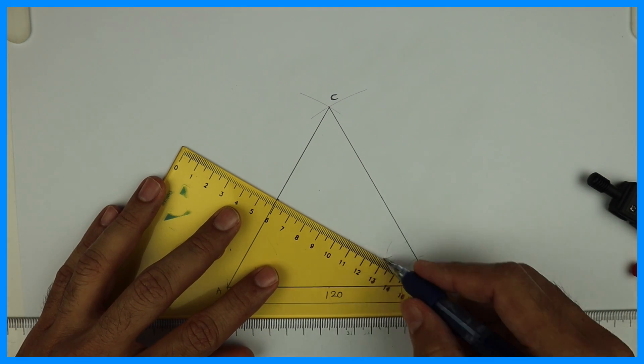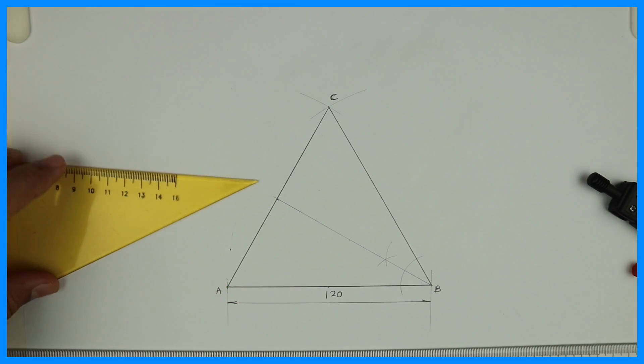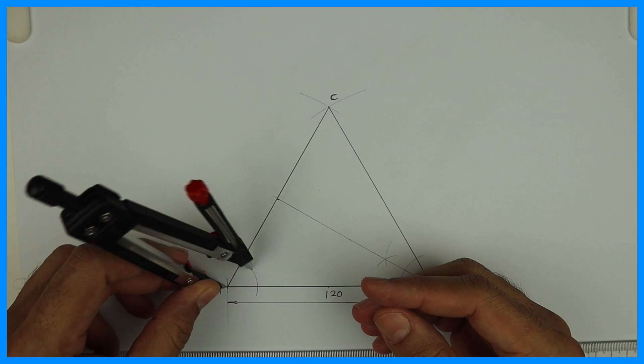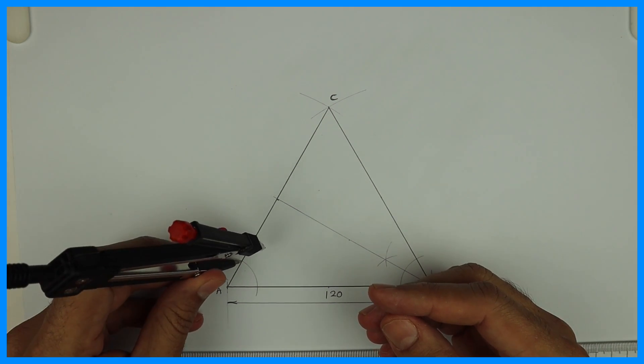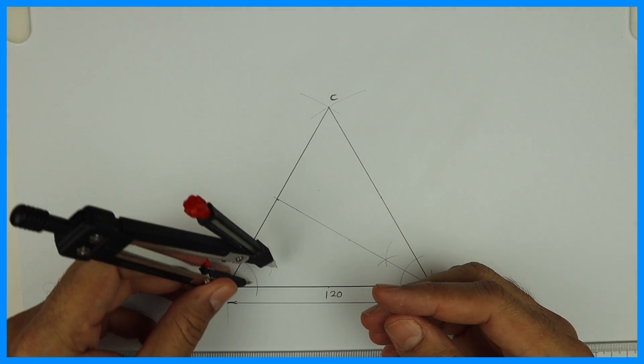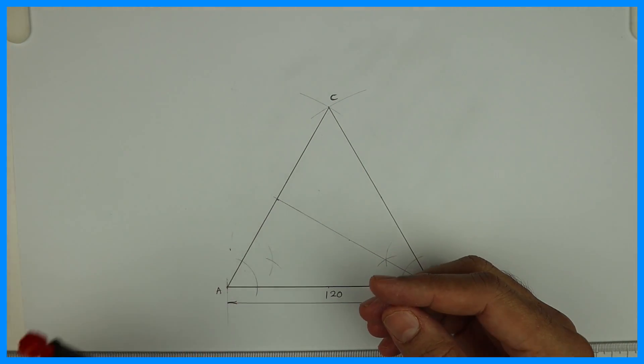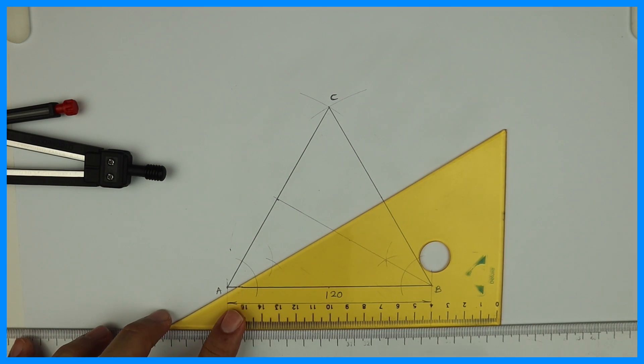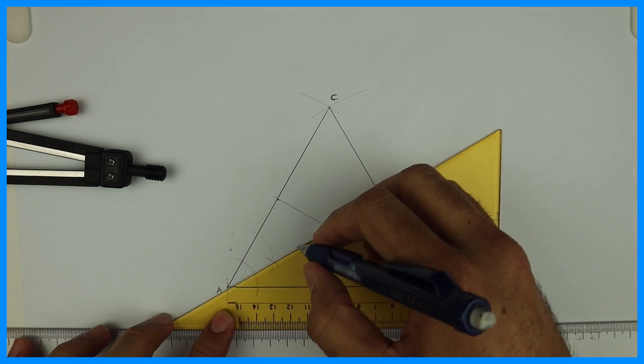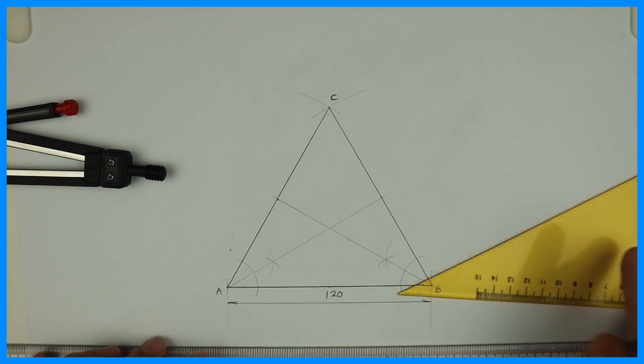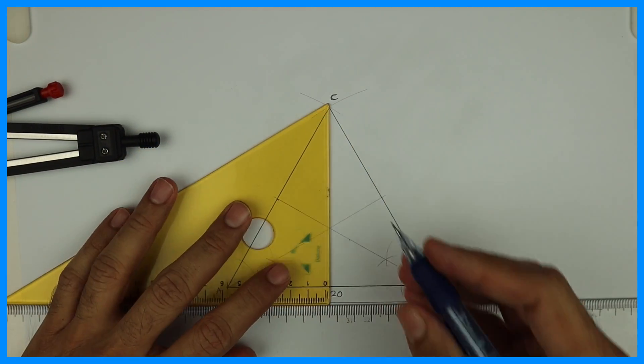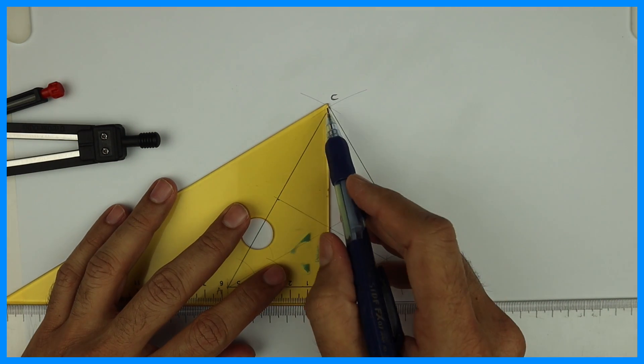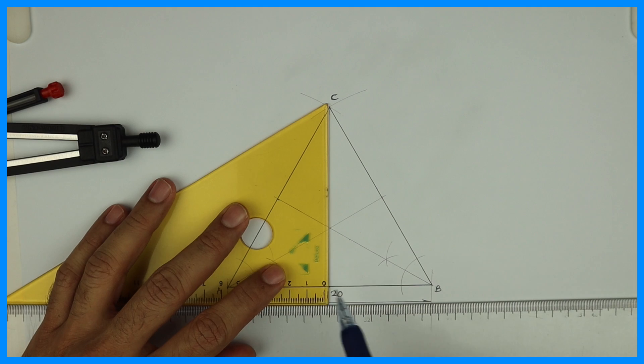Same way I will bisect angle A. From here I will draw a line. Wherever it will cut, that will be the midpoint. Then you can draw a straight line from C. So what we are doing is we have divided the triangle into three parts.